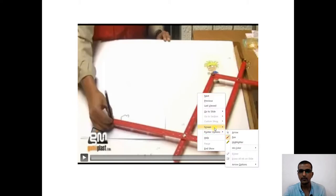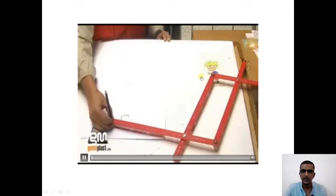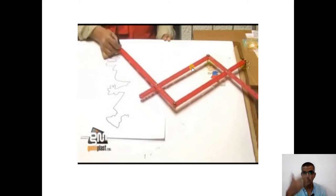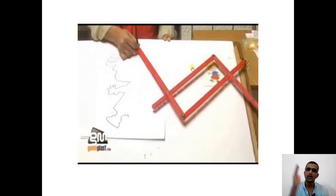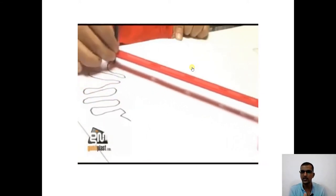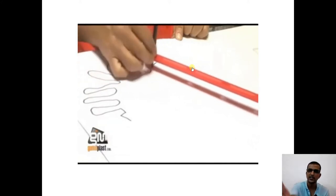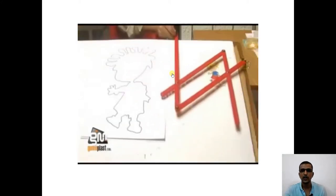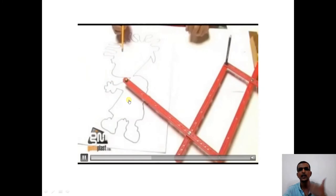Let us take one more example. There is a small cartoon template available. As the person traces it, the pantograph reproduces the same cartoon on an enlarged scale. Each pantograph is capable of producing a certain scale, and based on that you design accordingly. This is a flexible pantograph wherein you can change the dimensions of the parallelogram with the help of a hook. Here we can see the template and the reproduced image on a larger scale.